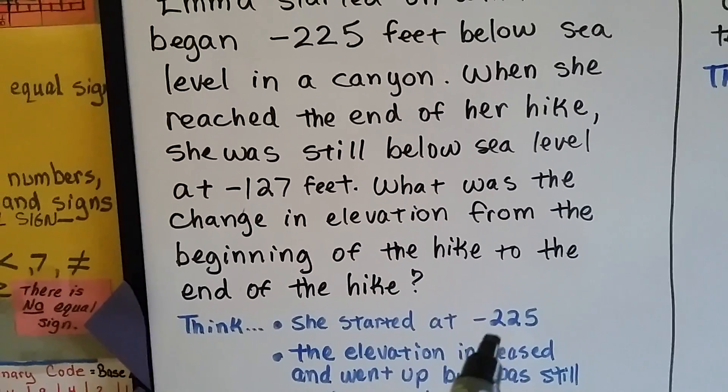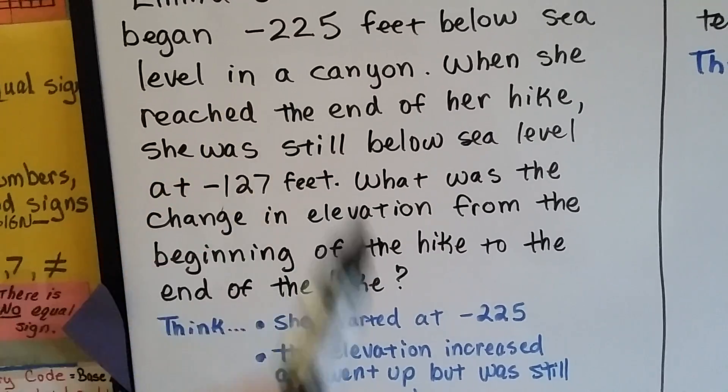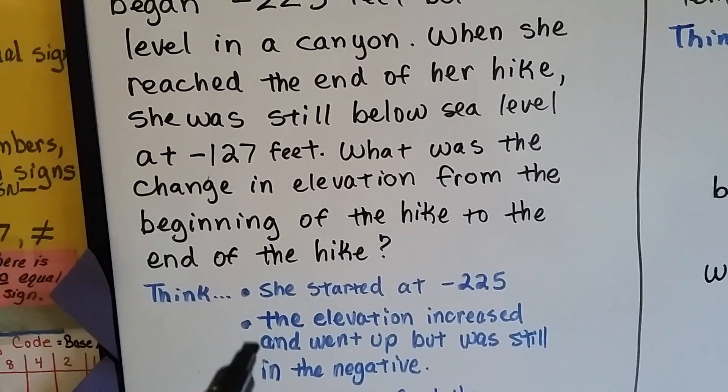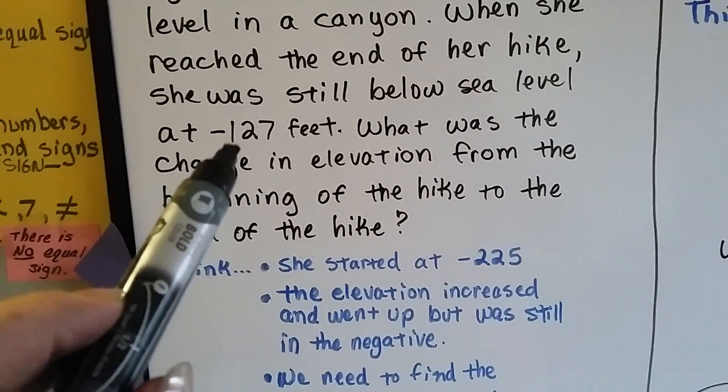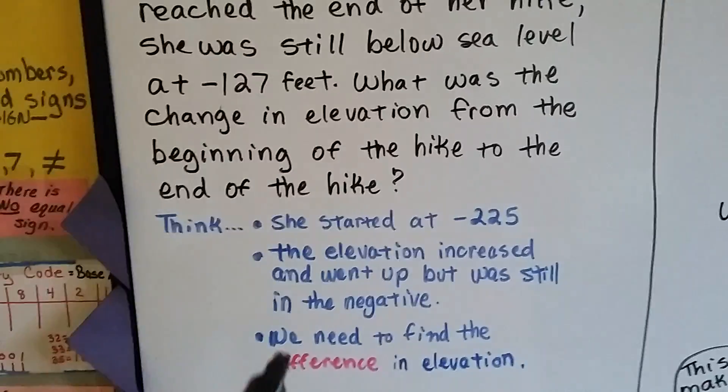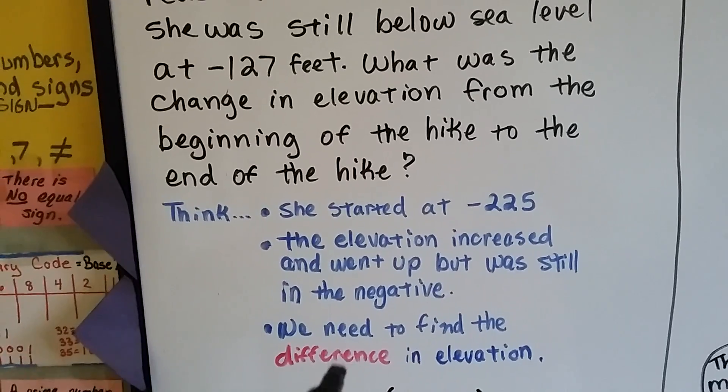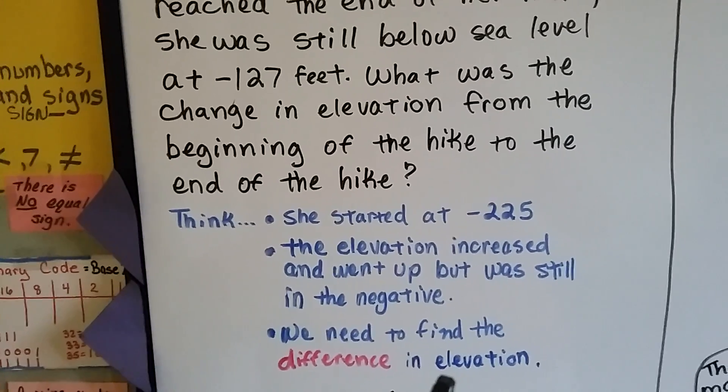She started at negative 225, right? The elevation increased and went up, but it was still in the negative, right? Negative 127. And we need to find the difference in elevation.